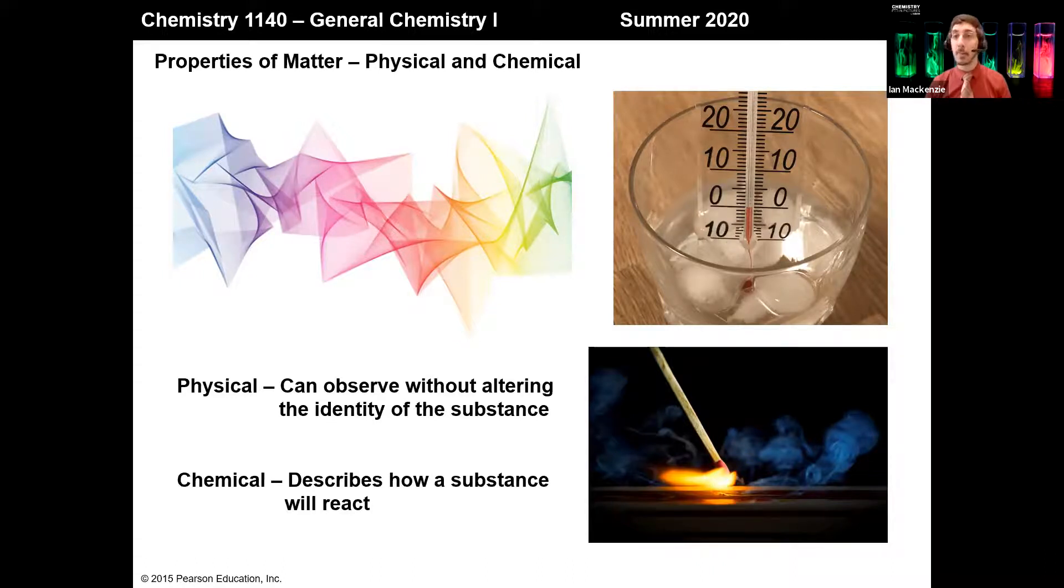Another one might be the ignition temperature for a liquid like gasoline. You can measure it, but in the process of measuring it, you've changed the substance. Fundamentally, chemical properties describe how a substance will react.